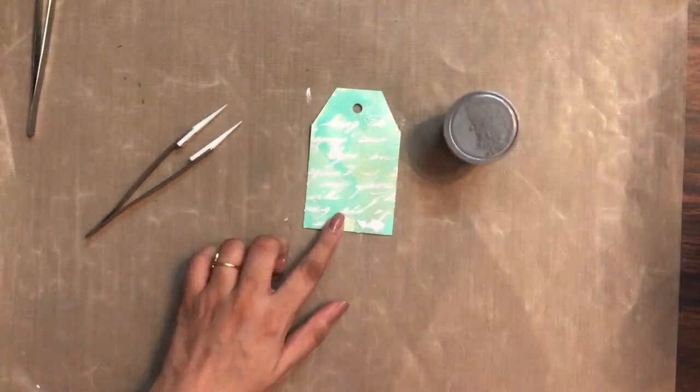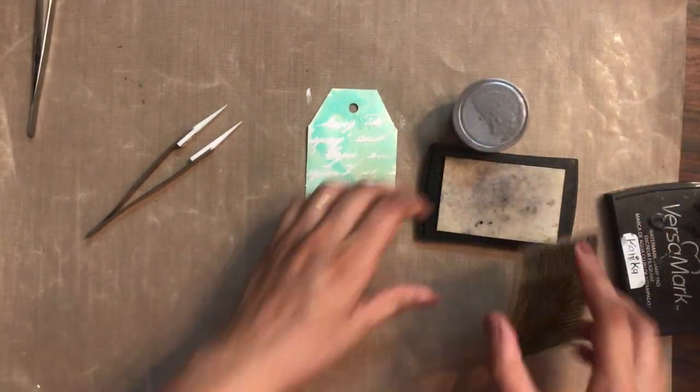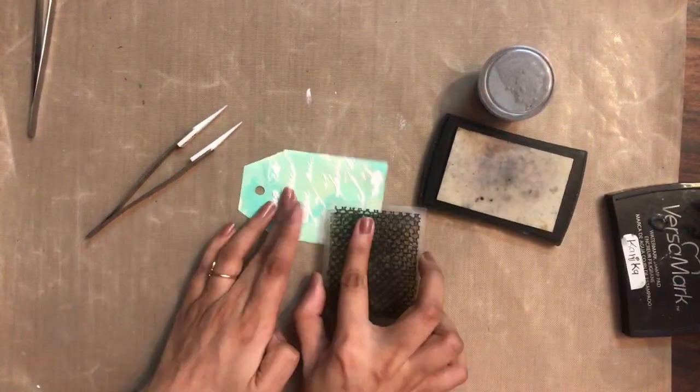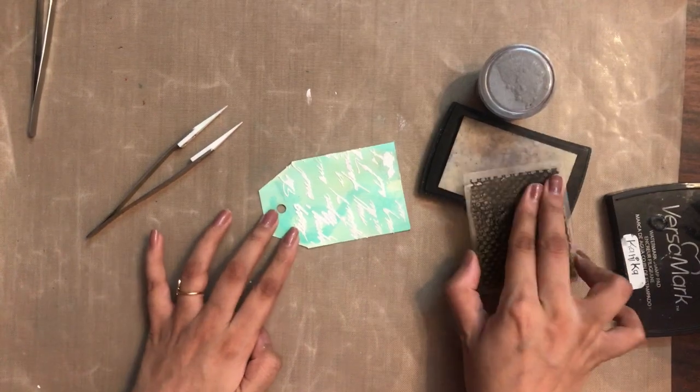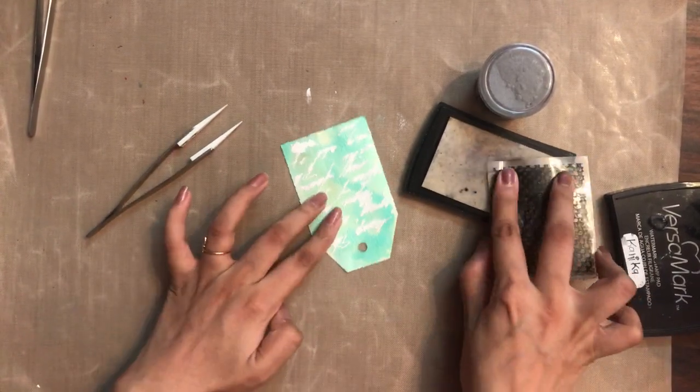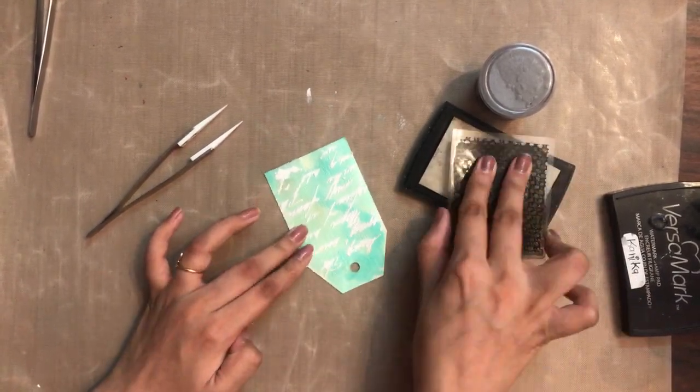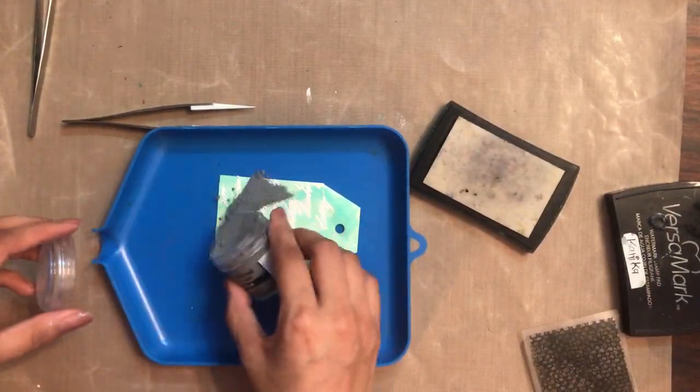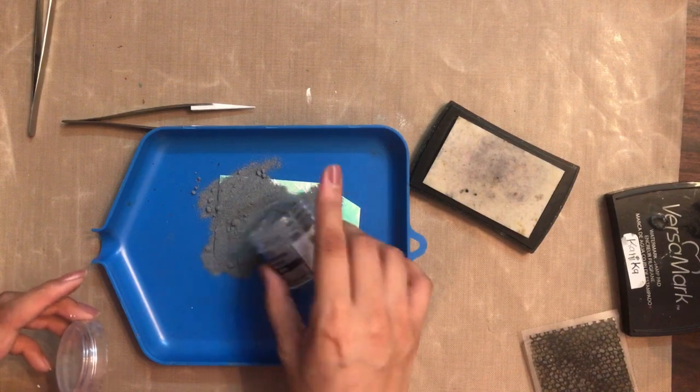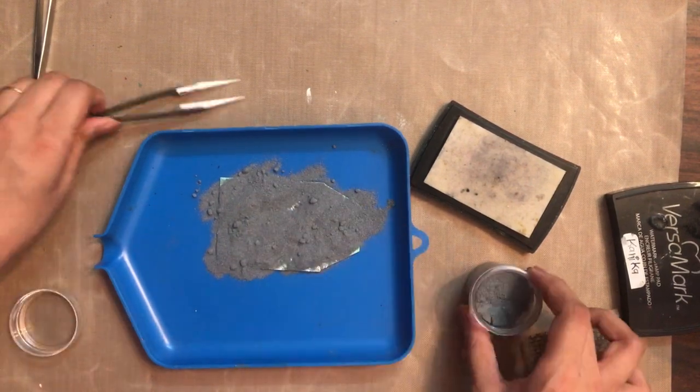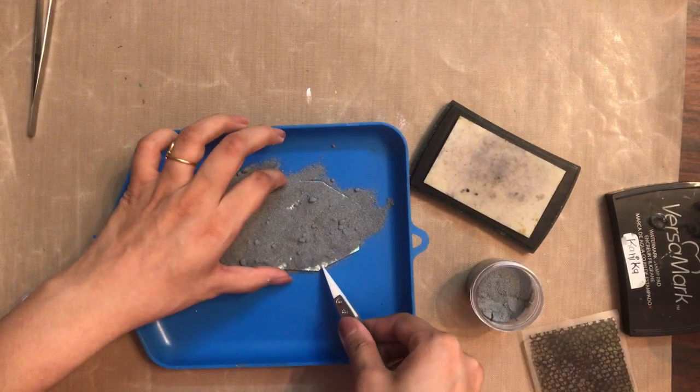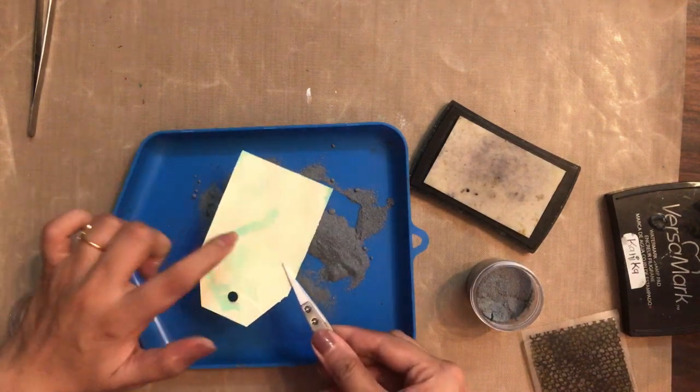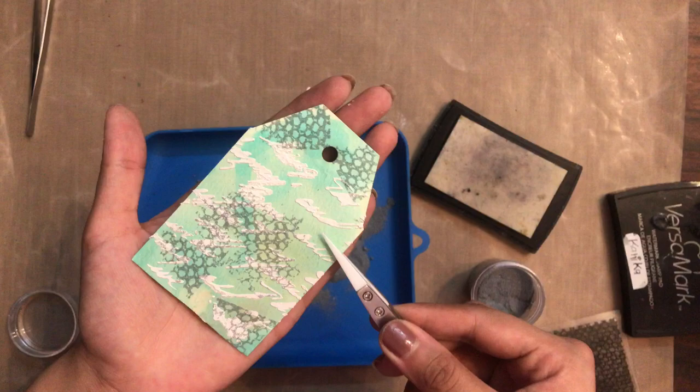For the next step, here I have my silver heat embossing powder. I'll be doing heat embossing using my Versamark ink. Here I have my stamp and I am randomly stamping it. After I'm done stamping it, I'm going to keep my tag onto my funnel tray and spread over the embossing powder.